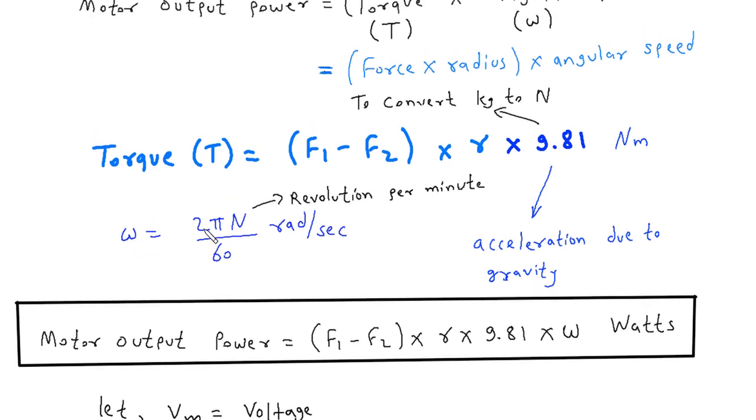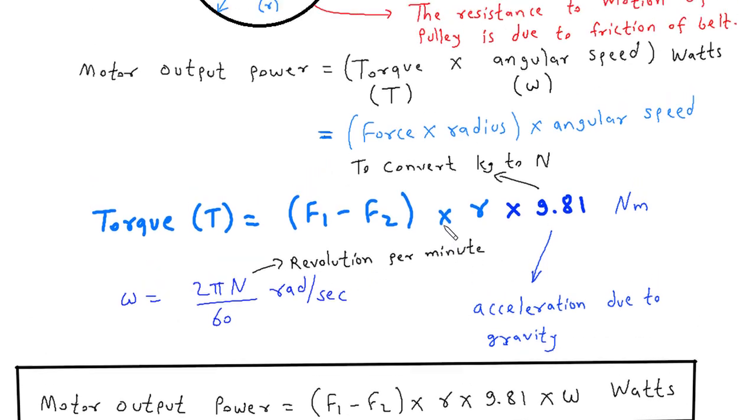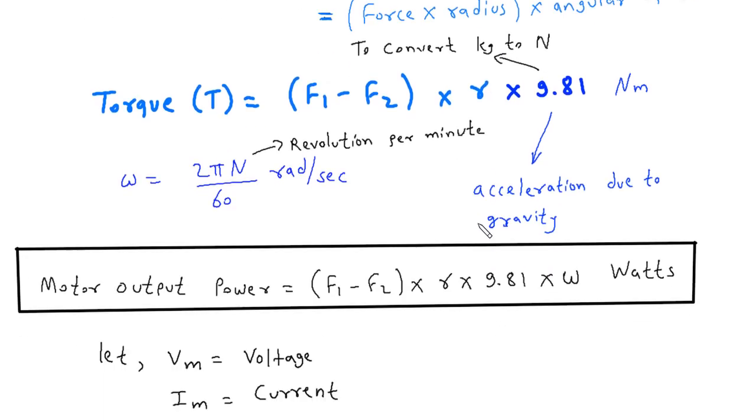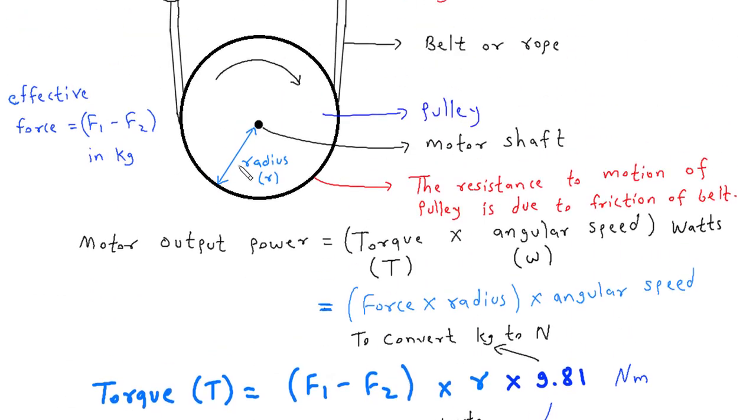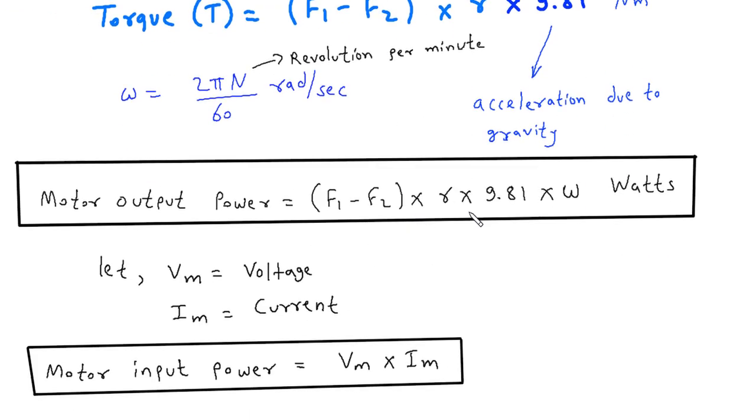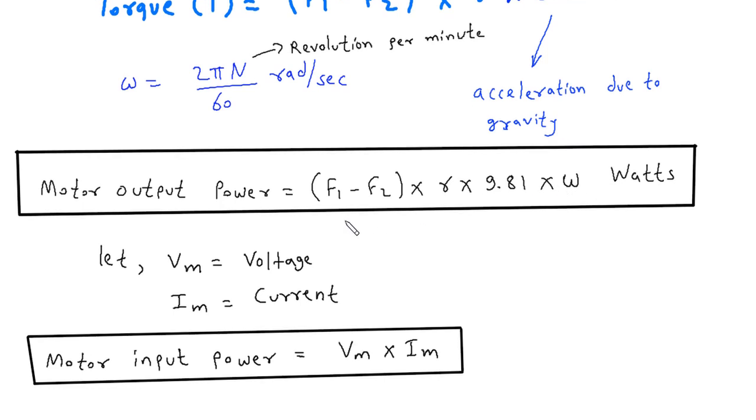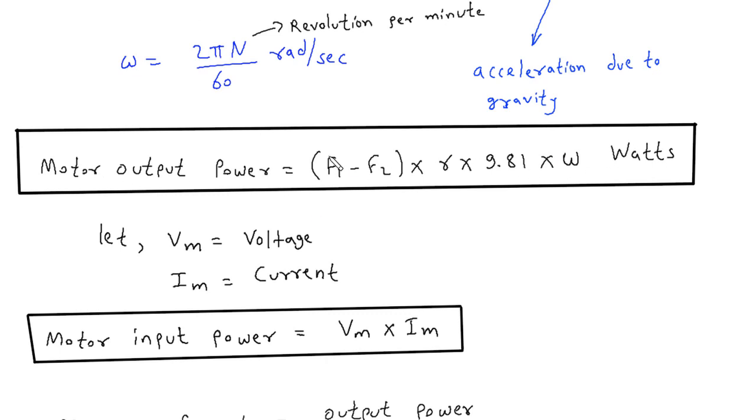We know ω is equal to 2πN upon 60, where N is revolution per minute. Here we can replace this ω by 2πN upon 60, or we can keep as it is. So motor output power is equal to (F1-F2) into R, where R is radius of the pulley, into 9.81, which is acceleration due to gravity, into ω. Omega is the angular speed. Now we know the output power of motor.